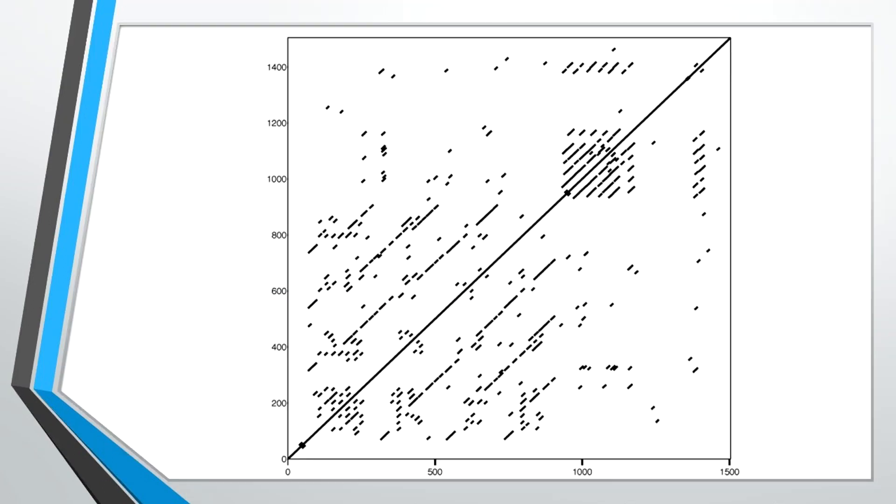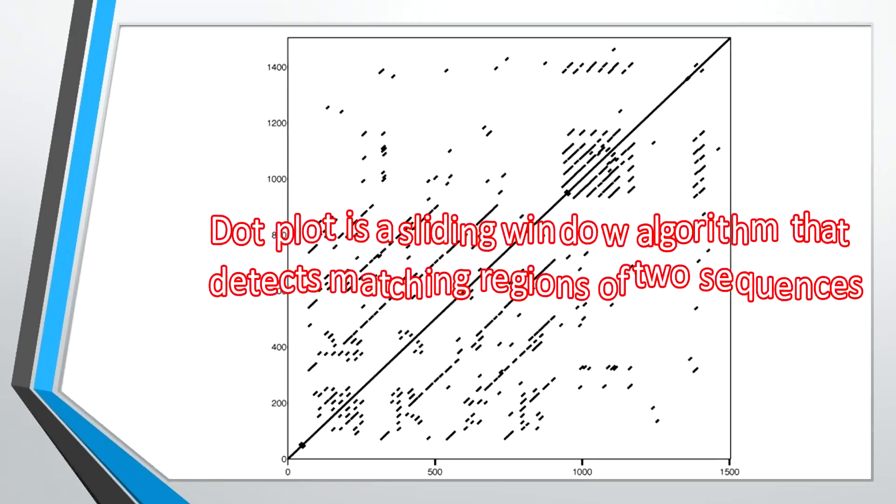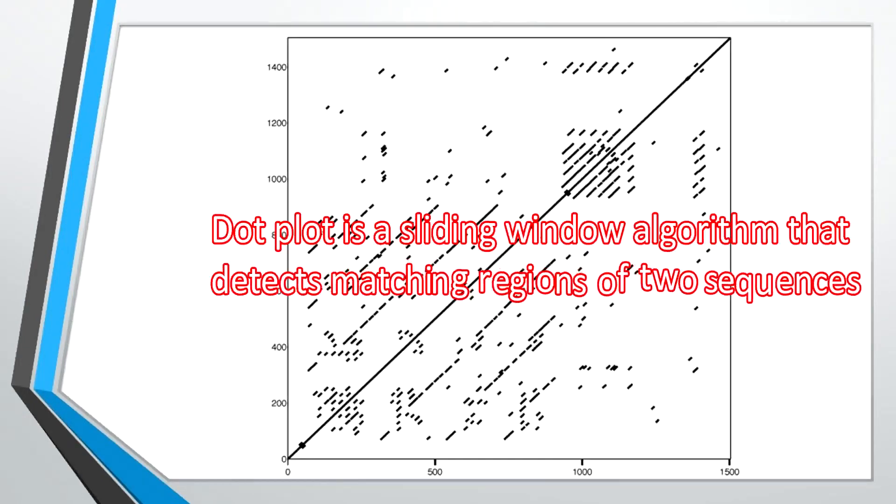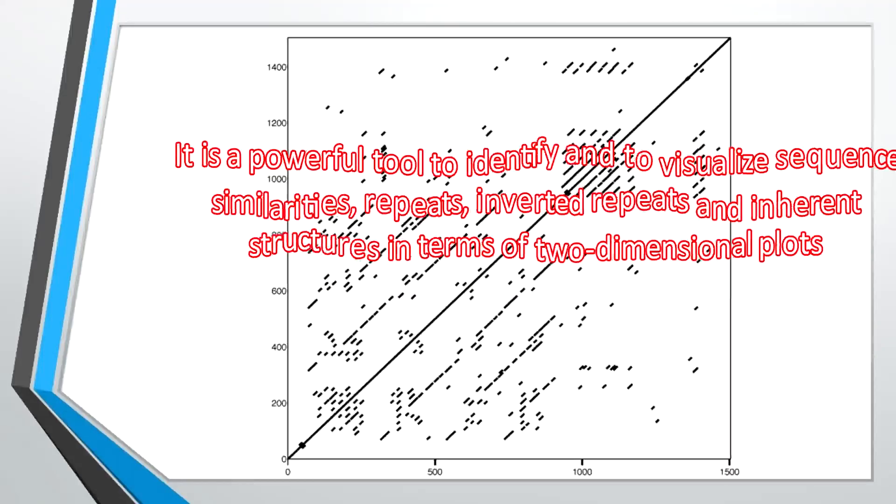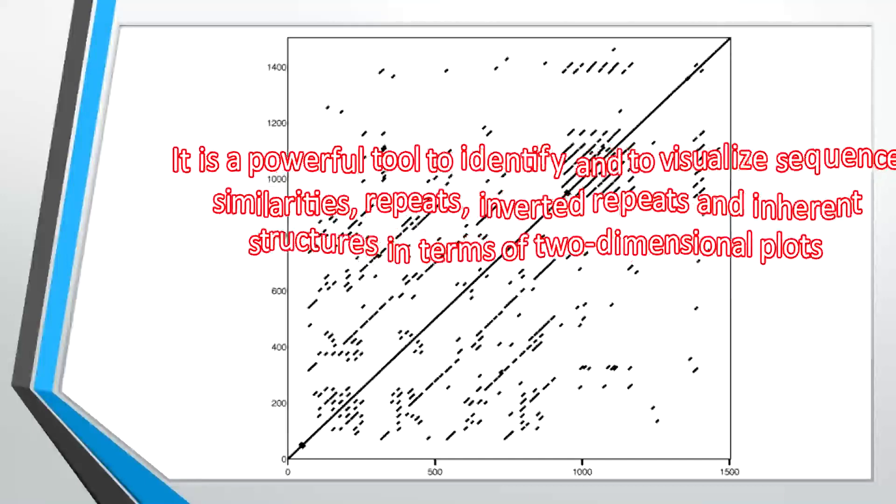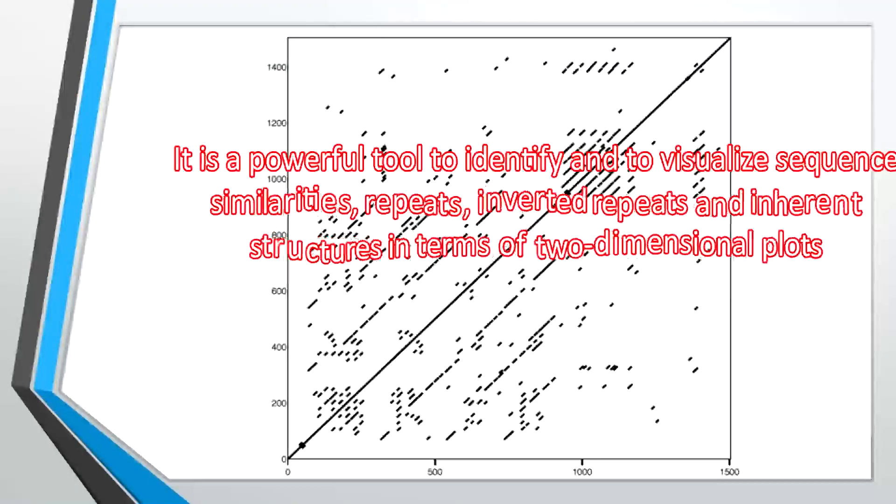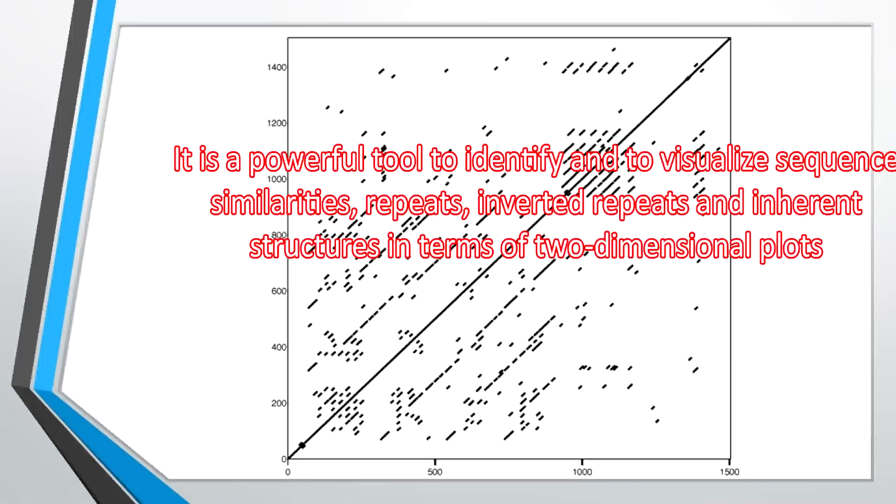So, first of all, what is a dot plot? Dot plot is a sliding window algorithm that detects matching regions of two sequences. It is a powerful tool to identify and visualize sequence similarities, repeats, inverted repeats, and inherent structures in two-dimensional plots.